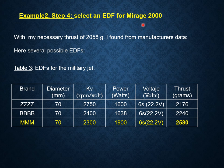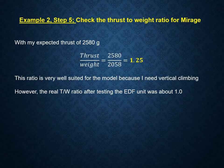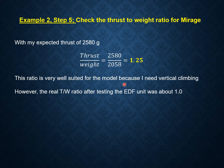Selecting an EDF for the Mirage 2000 based on the necessary thrust. With my total weight and expected thrust, I estimate the thrust-to-weight ratio, which gives 1.25. This ratio is very well suited for the model because I need vertical climbing. However, the real thrust-to-weight ratio after testing was about 2,068 grams of thrust, so my final real-world thrust-to-weight ratio was about 1.